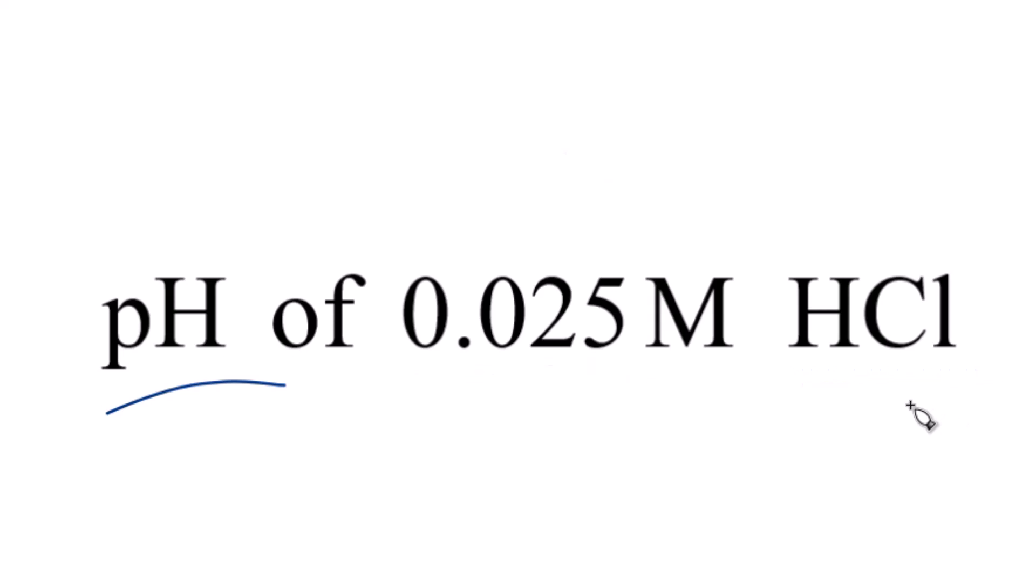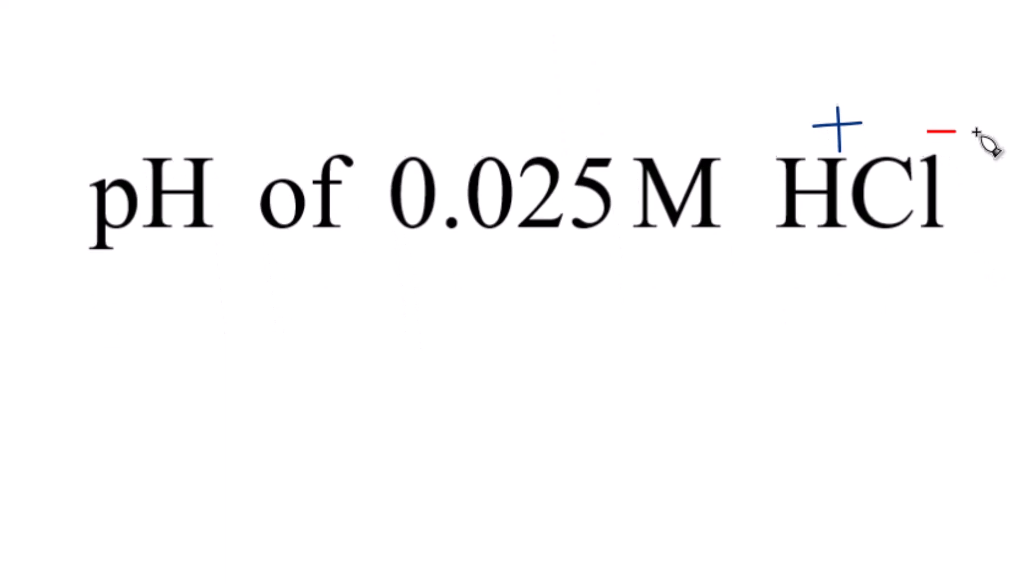First off, you need to know that hydrochloric acid is a strong acid, so it's going to dissociate completely into its ions. Just need to memorize that. And we'll get H plus and we'll get Cl minus.